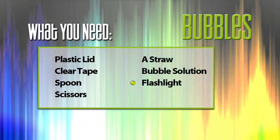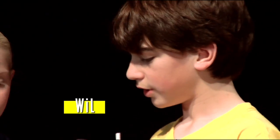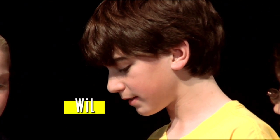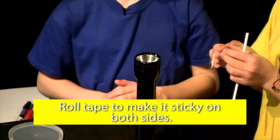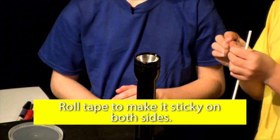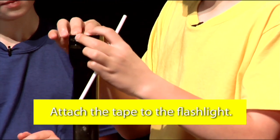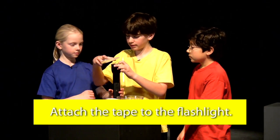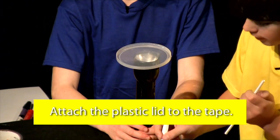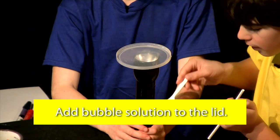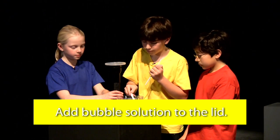Next, you put it all together. First, you're going to take a piece of clear tape. Then you're going to want to make it sticky on both sides. Place that on the flashlight. Then take the plastic lid and attach it to the tape.